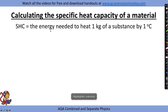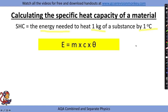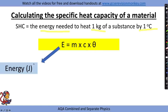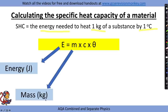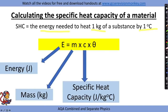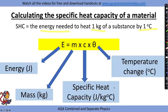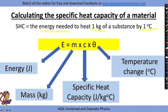In this practical you'll be calculating the specific heat capacity of a material. Specific heat capacity is the energy needed to heat one kilogram of a substance by one degree Celsius. The equation that goes with this practical is given on your data sheet: E equals m times c times theta, where E is energy in joules, m is mass in kilograms, c is specific heat capacity in joules per kilogram per degree Celsius, and theta is temperature change in degrees Celsius.